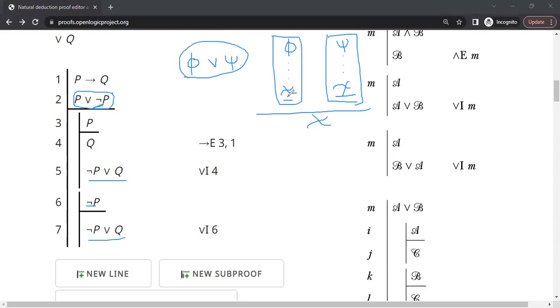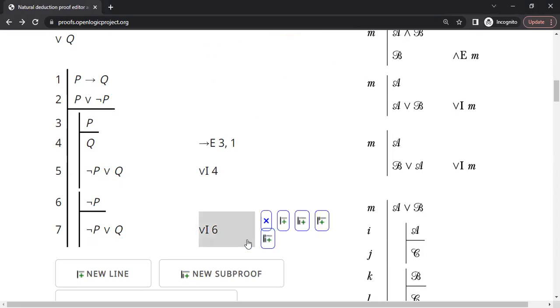In either case, if PI is true, we are able to arrive at some theta. SI is true, we are able to arrive at some theta. Therefore, theta is the conclusion in both cases.